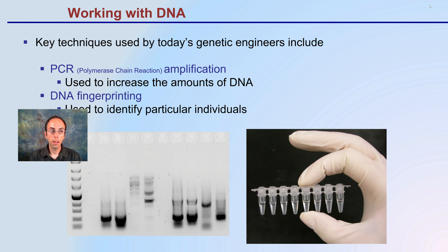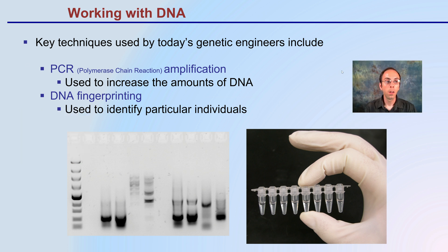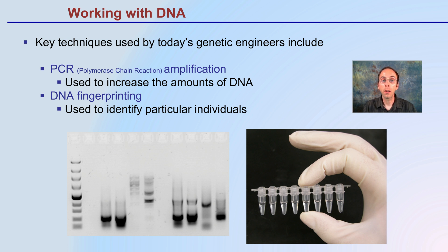Now, working with DNA, there are many different ways scientists will work with it. There's PCR — Polymerase Chain Reaction Amplification — where we upregulate a small section of DNA to be used and run through potentially a gel. And DNA fingerprinting is used to identify particular individuals or specific sequences within a genome.